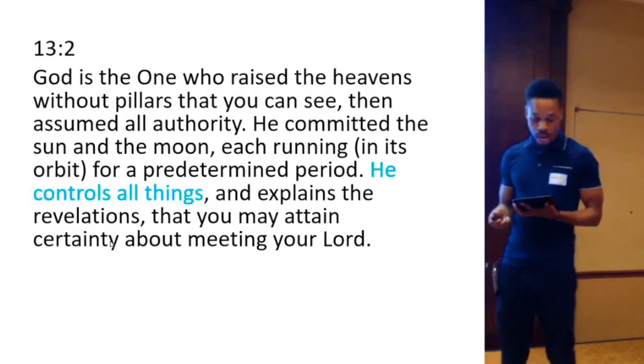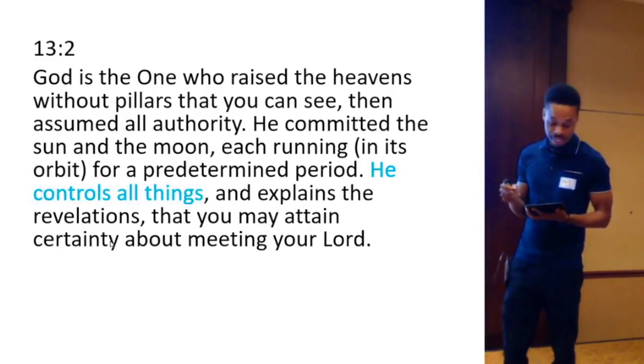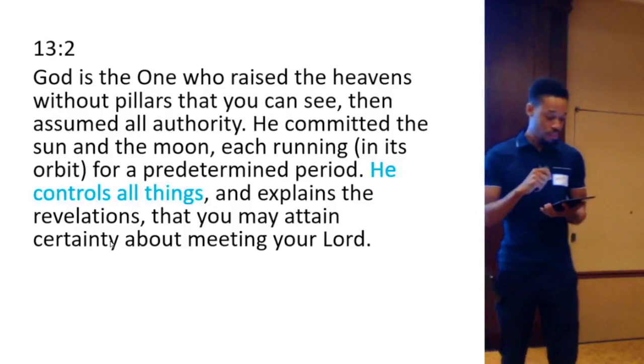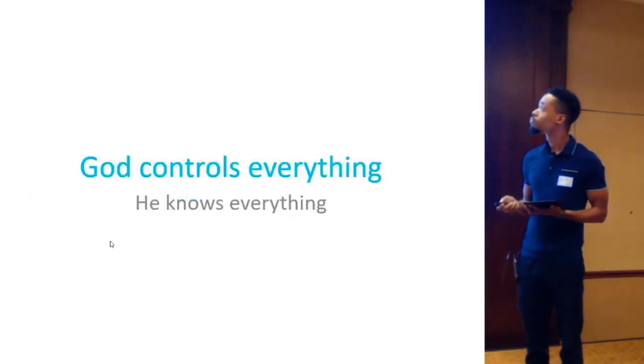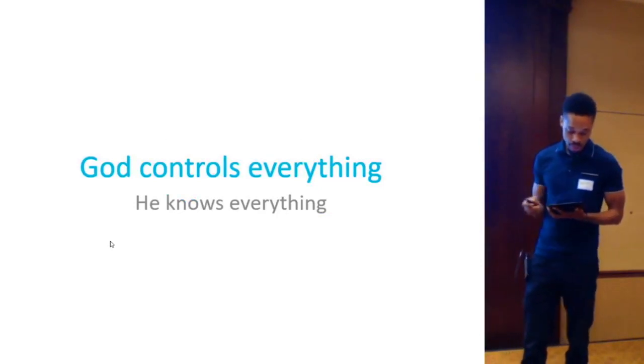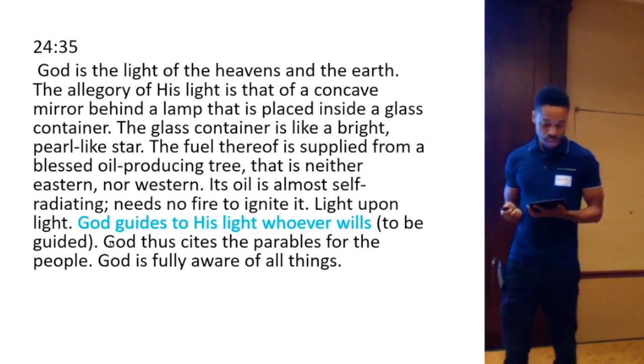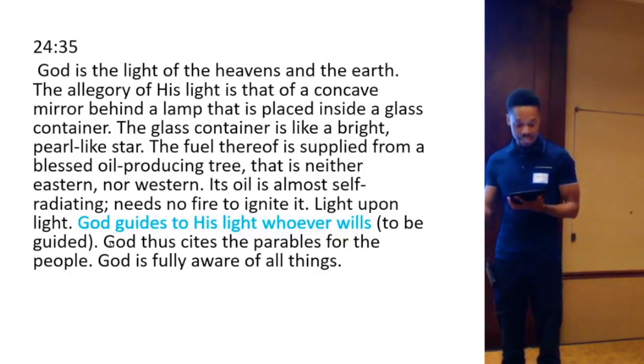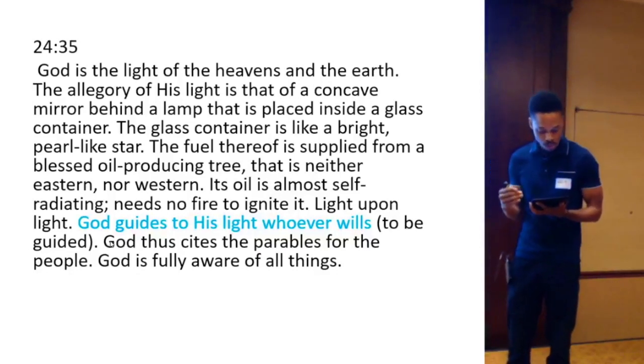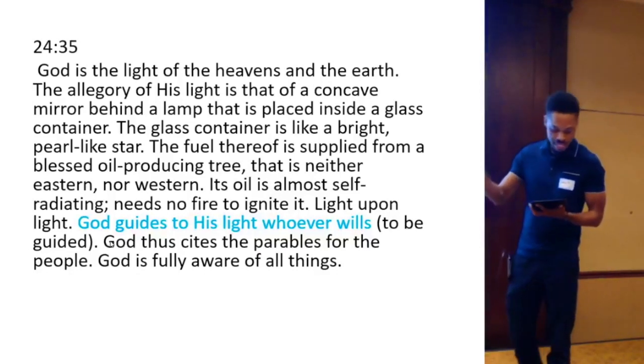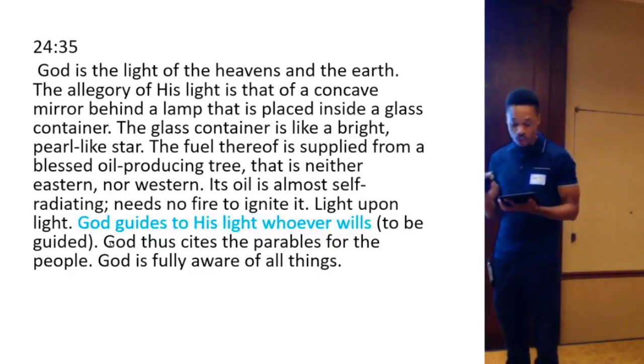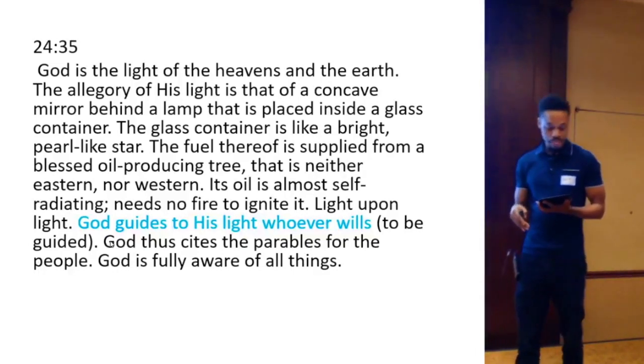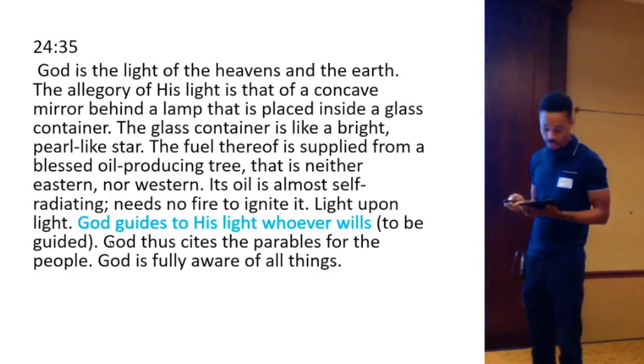Chapter 13 verse 2, God is the one who raised the heavens without pillars that you can see then assume all authority. He committed the sun and the moon running, each running for a predetermined period. He controls all things and explains the revelations that you may obtain certainty about meeting your Lord. God controls everything and he knows everything. Chapter 24 verse 35, God is the light of the heavens and the earth. The allegory of his light is that a concave mirror behind a lamp that is placed inside a glass container. The glass container is like a bright pearl-like star. The fuel thereof is fueled from a blessed oil-producing tree that is neither eastern nor western. Its oil is almost self-radiating. Need no fire to ignite it. Light upon light. God guides to his light whoever he wills. Be guided. God cites the parable for the people to reflect, to think. God is fully aware of all things.